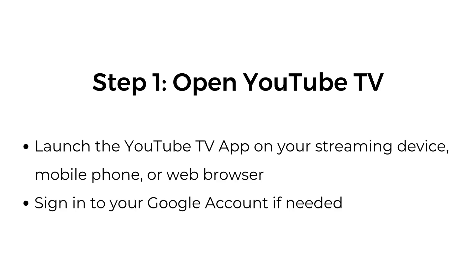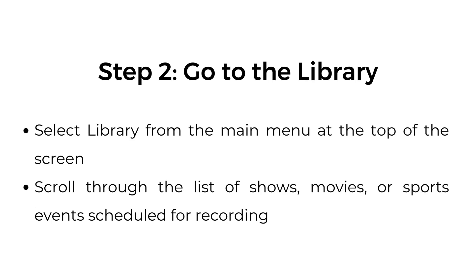Step 1: Open YouTube TV. Launch the YouTube TV app on your streaming device, mobile phone, or web browser. Sign in to your Google account if needed. Step 2: Go to the library. Select Library from the main menu at the top of the screen.